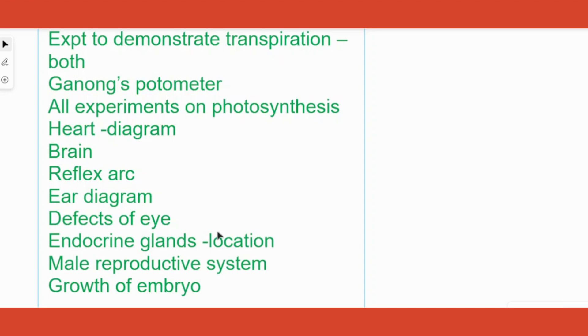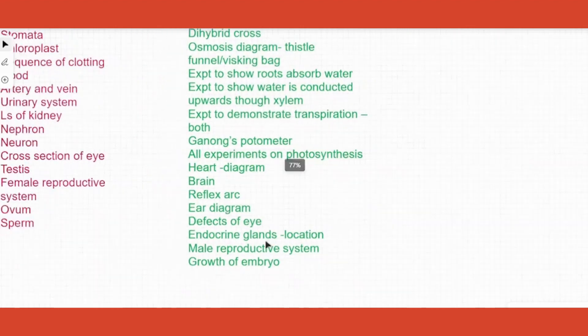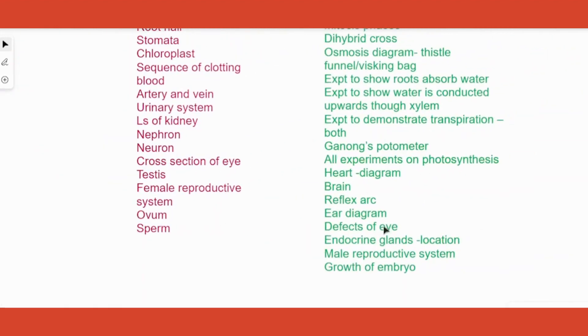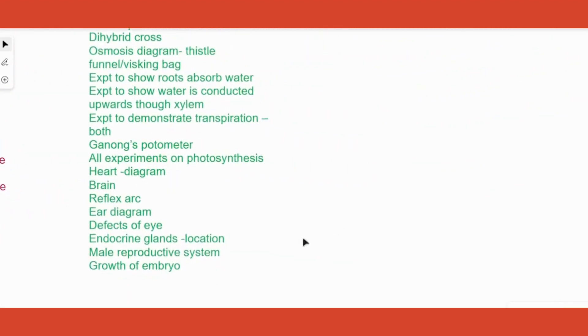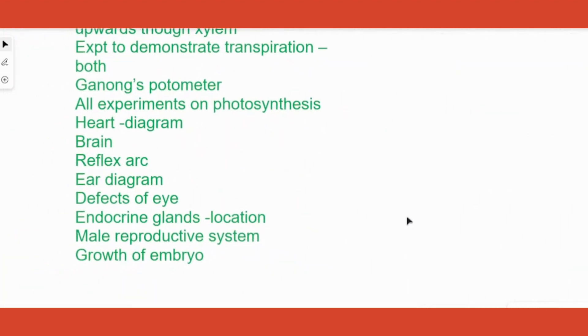Male reproductive system they don't ask you to draw, even though female diagram can be asked. Female reproductive system I have put here because they ask you to draw it, but male usually they don't ask you to draw but then complicated questions to label the accessory glands from which children go wrong, so please be clear which gland is where and so on.